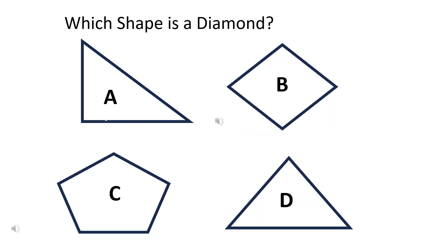Which shape is a diamond? The right answer is B.